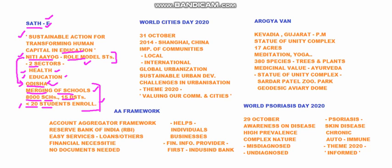The next topic is the AA Framework, whose full form is Account Aggregator Framework. This was brought forward recently by the Reserve Bank of India to provide easy services to customers. In giving loans or other banking procedures, this framework makes the process easier, helping with financial necessities of individuals or businesses. No heavy documentation is needed, giving easy banking services to the public.